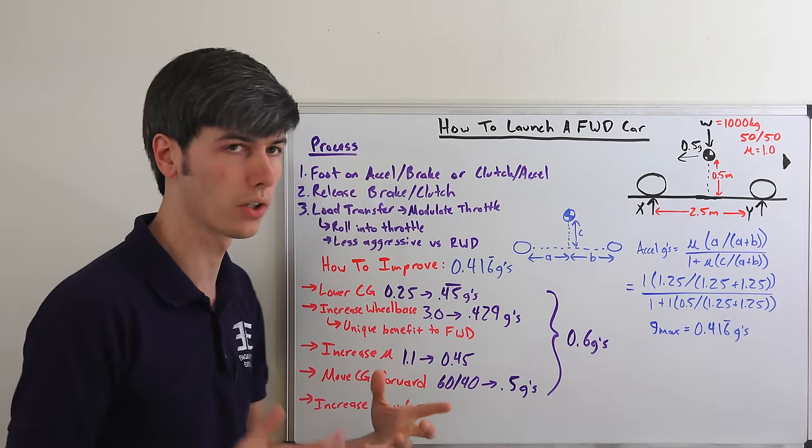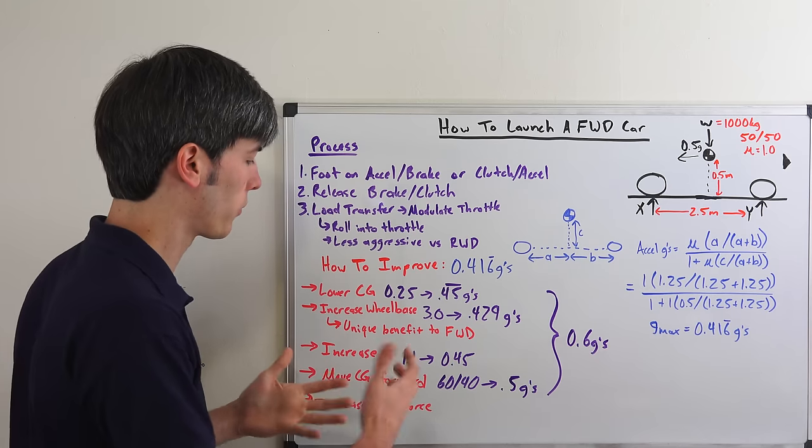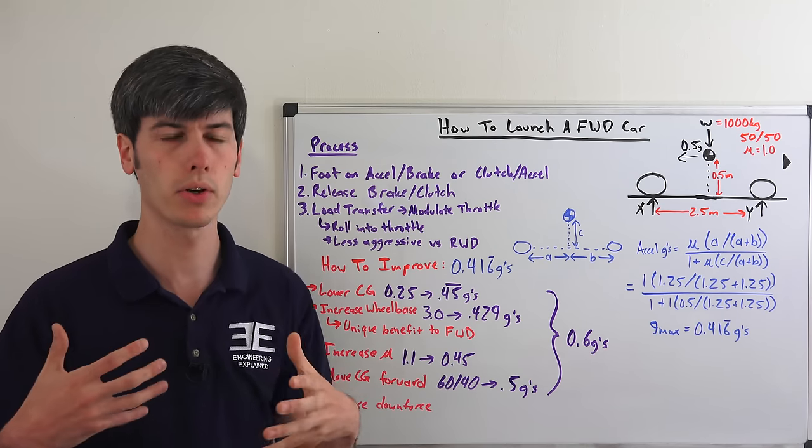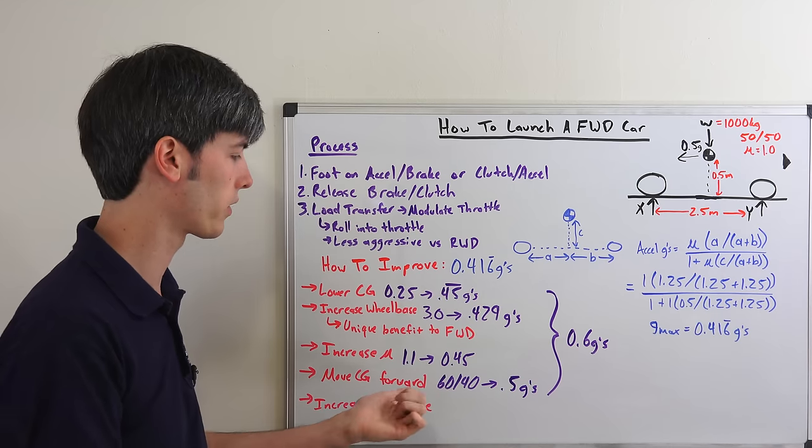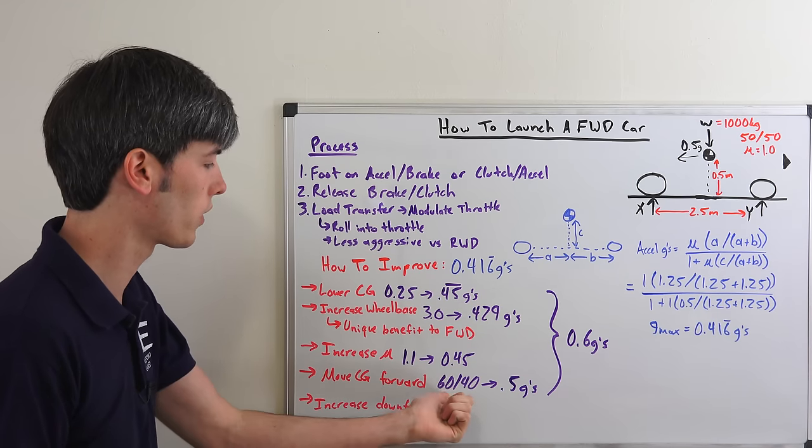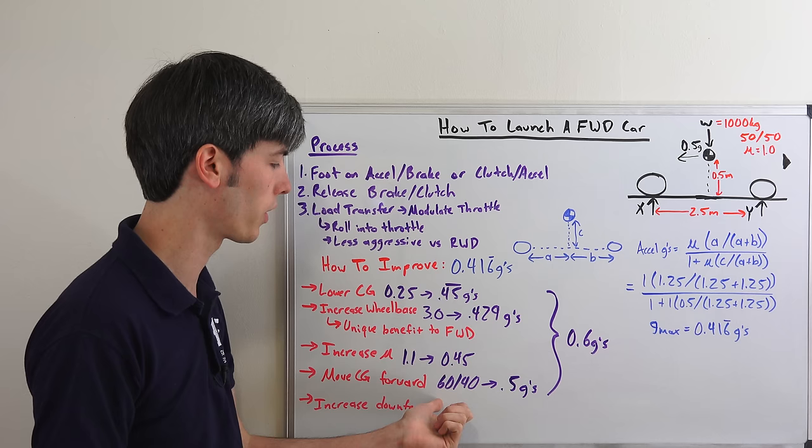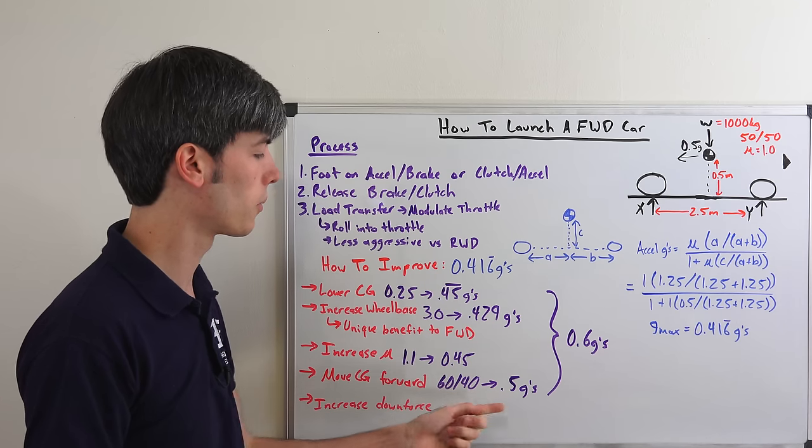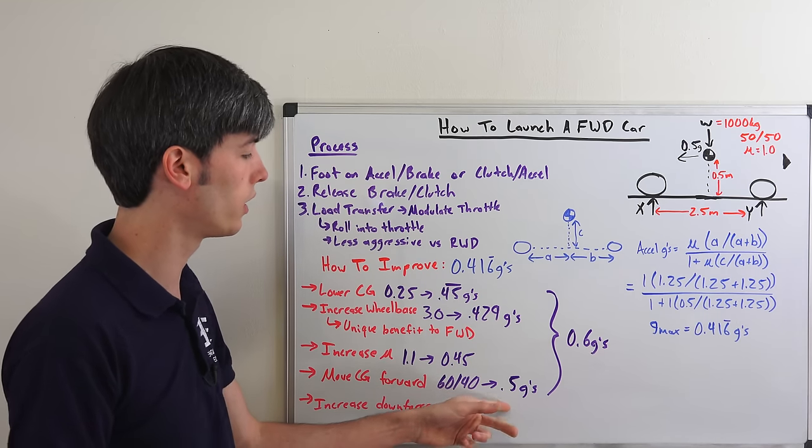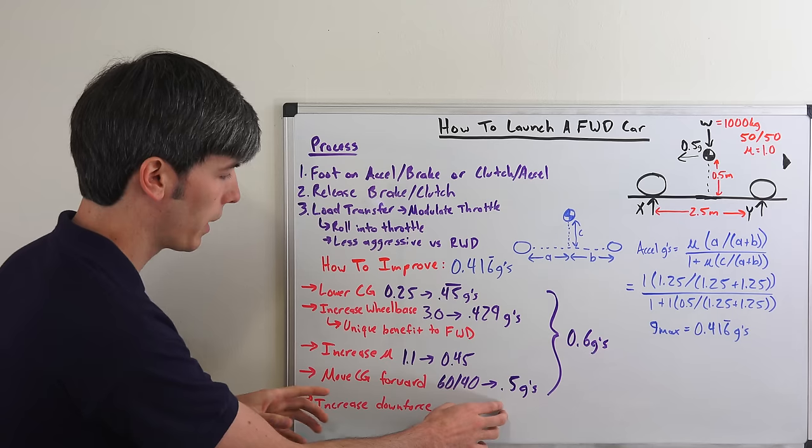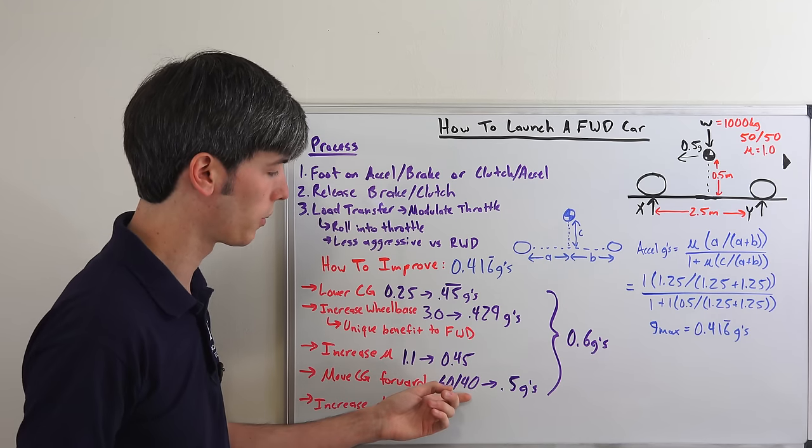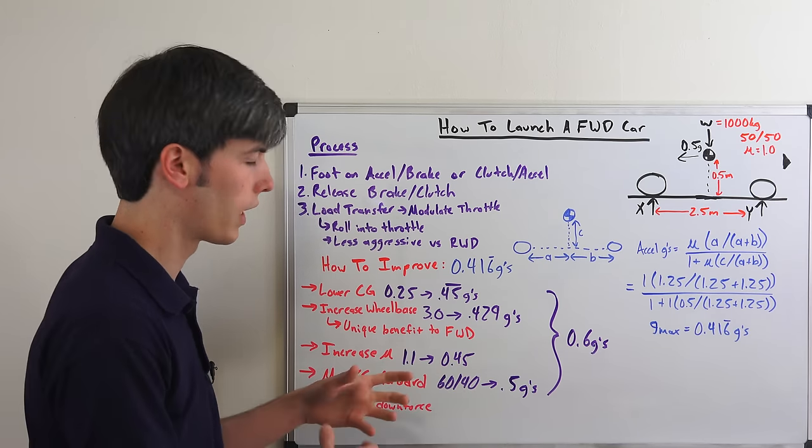And another thing which you'll often see: front-engine cars tend to be front-heavy anyways, but for front-wheel drive vehicles it may be important to have some of that weight up front from an acceleration standpoint. So if you have a 60-40 weight distribution, 60% in the front, 40% in the rear, you're going to be able to accelerate at 0.5 G's assuming you have the power.